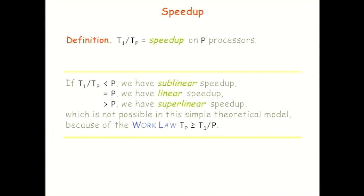Speedup is T_1 over T_p — how much faster you are with p processors than with one. If speedup is less than p, we have sublinear speedup and aren't using all processors. We prefer linear speedup where T_1 over T_p equals p. Superlinear speedup is not possible in this model, though it can occur in models that account for caching. The parallelism is the maximum speedup, T_1 over T_infinity — the average amount of work per step along the span. In our example that's 18 divided by 9, which equals 2. Using more than 2 processors guarantees wastefulness; you won't get linear speedup.